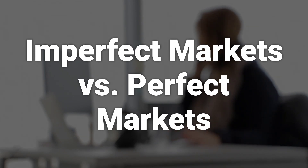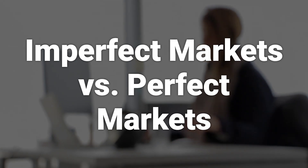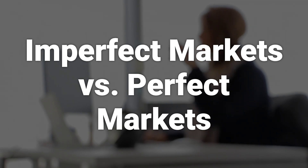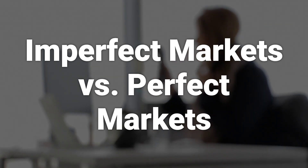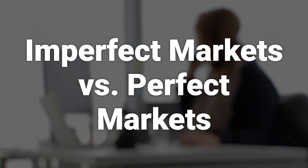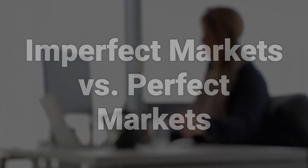Perfect markets, characterized by an unlimited number of buyers and sellers and homogeneous goods, are theoretical and cannot exist in the real world. Imperfect markets, on the other hand, exist in reality and are characterized by different products and tastes, lack of market equilibrium, and a diverse range of goods. It is a mistake to try to extrapolate the rules of perfect competition into a real-world scenario.